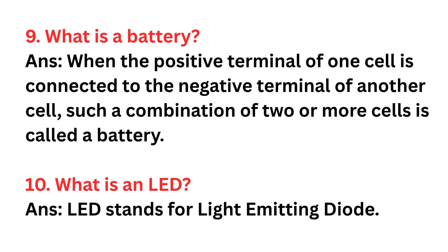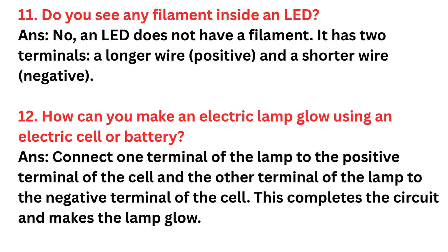Question nine: What is a battery? Answer: When the positive terminal of one cell is connected to the negative terminal of another cell, such a combination of two or more cells is called a battery. Question ten: What is an LED? Answer: LED stands for Light Emitting Diode. Question eleven: Does an LED have a filament? Answer: No, an LED does not have a filament. It has two terminals — a longer wire (positive) and a shorter wire (negative). Question twelve: How can you make an electric lamp glow using a cell? Answer: Connect one terminal of the lamp to the positive terminal of the cell and the other terminal to the negative terminal. This completes the circuit and makes the lamp glow.